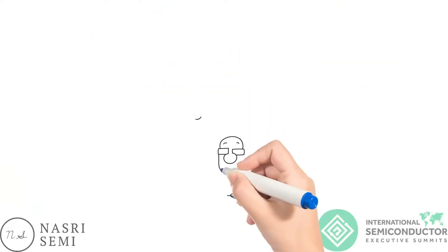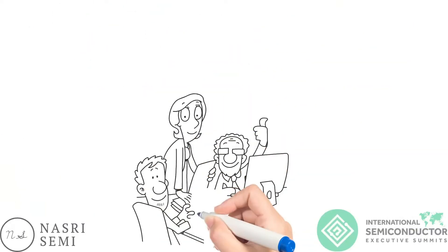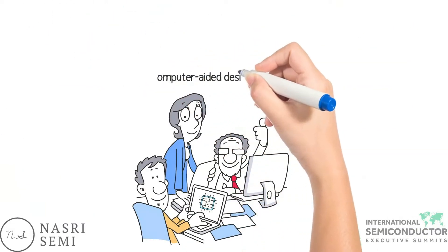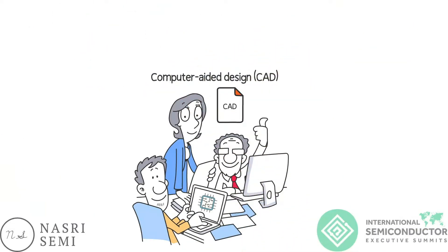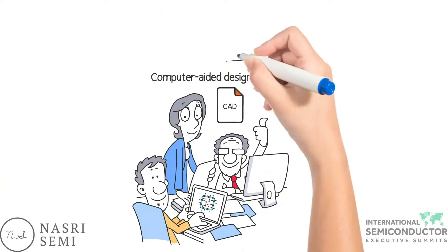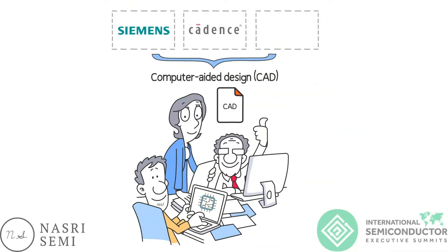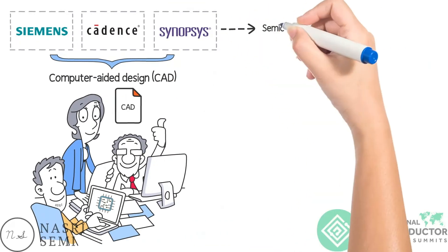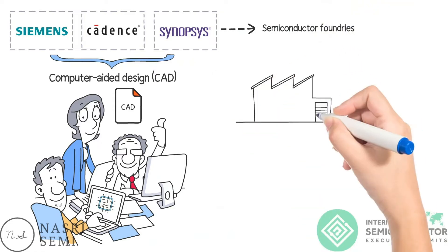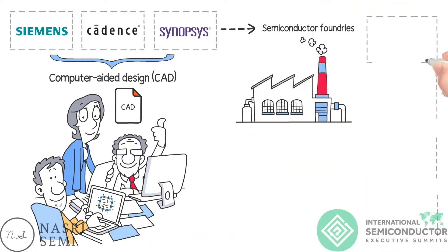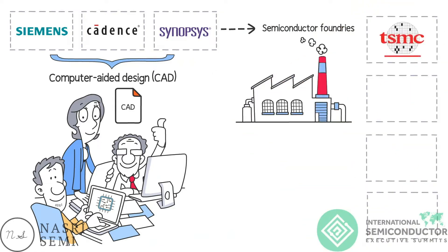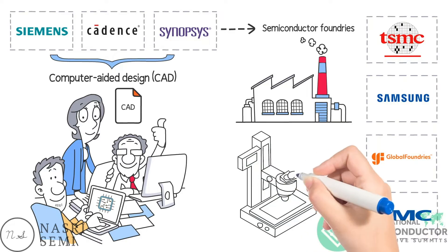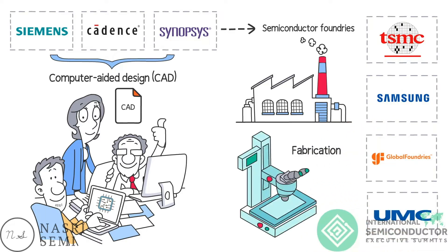They create designs for chips using computer-aided design, otherwise known as CAD software, from companies like Siemens, Cadence and Synopsys, and then send those designs to semiconductor foundries like TSMC, Global Foundries, UMC, etc., for fabrication.